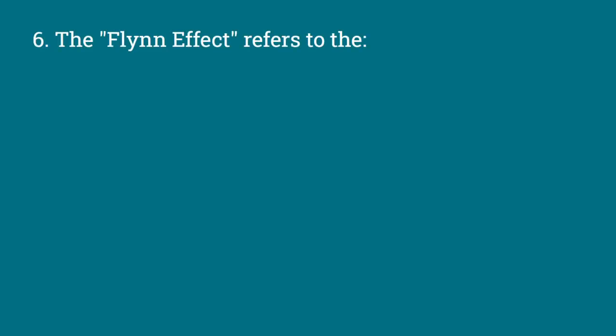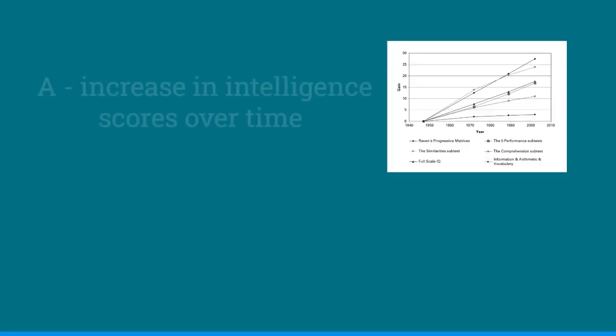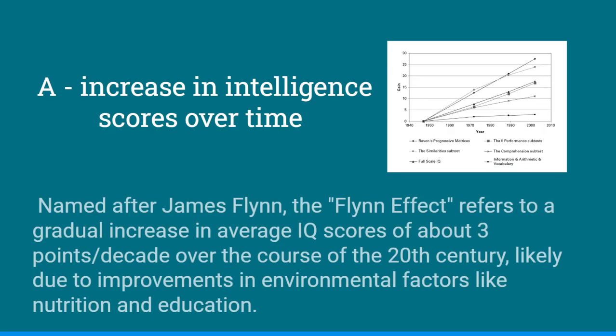The Flynn effect refers to a gradual increase in average IQ scores of about 3 points per decade over the course of the 20th century, likely due to improvements in environmental factors like nutrition and education.